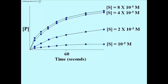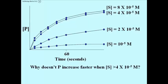So the question is why doesn't product formation increase at a faster rate when the substrate is larger than 4 times, or bigger than 4 times 10 to the minus 5th molar?